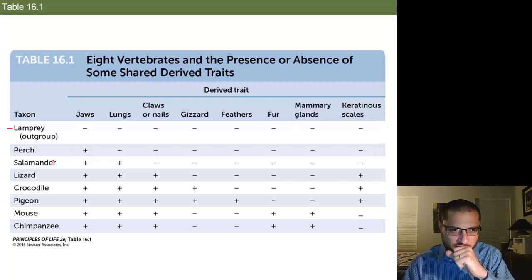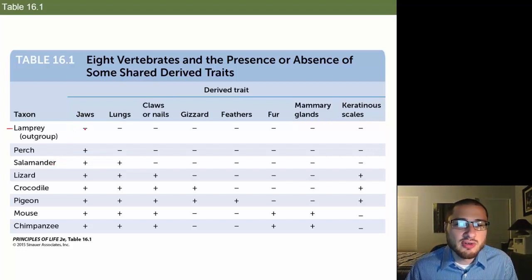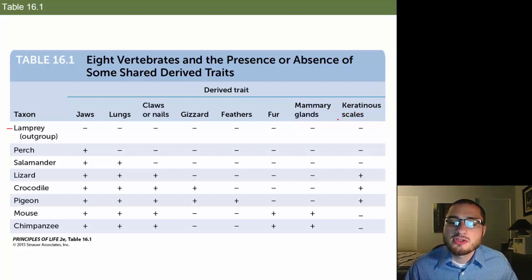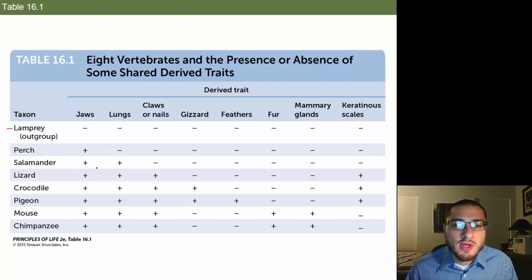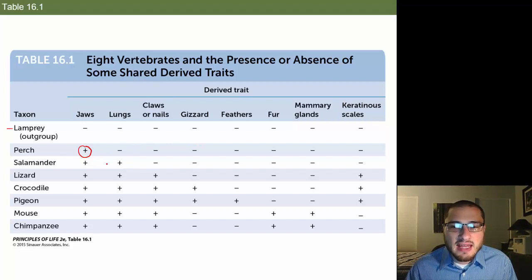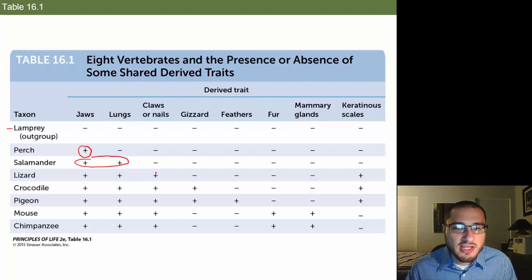The lamprey doesn't have a jaw, lungs, claws, gizzards, feathers, fur, mammary glands, or keratinous scales. By looking at which traits are present, you can start to build a phylogenetic tree showing which organisms are most closely related and which are not. The perch must have branched off first from the common ancestor because it has jaws but nothing else. Then came the salamander, and then the lizard.